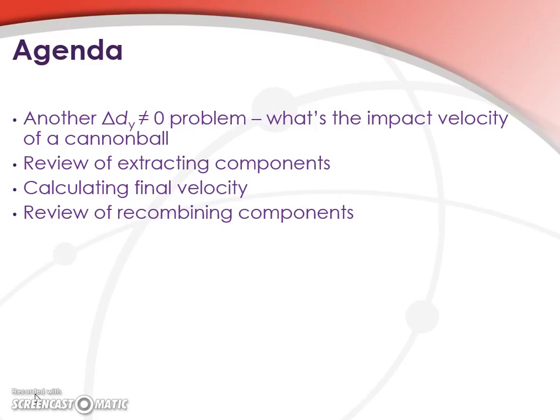We're going to discuss this other delta dy not equal to zero problem, what's the impact velocity of a cannonball. We're going to review how to extract the components of projectile motion, calculate final velocity for this asymmetric case, and review recombining components to get the impact velocity.